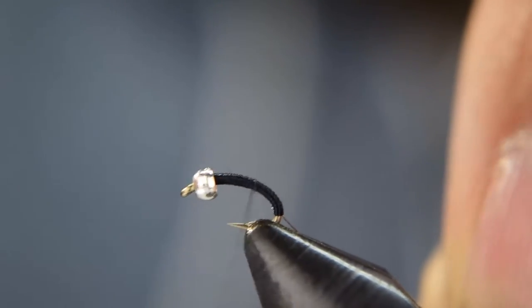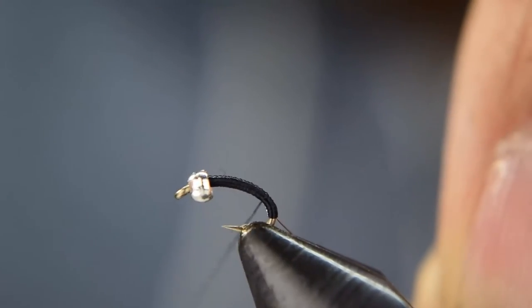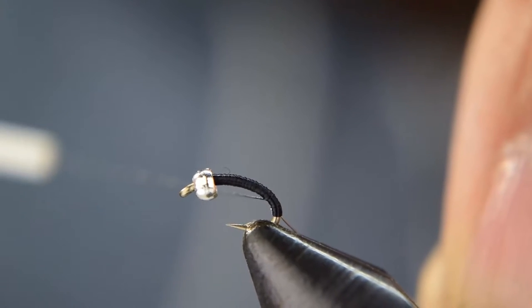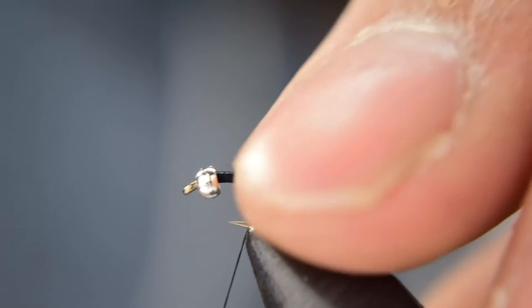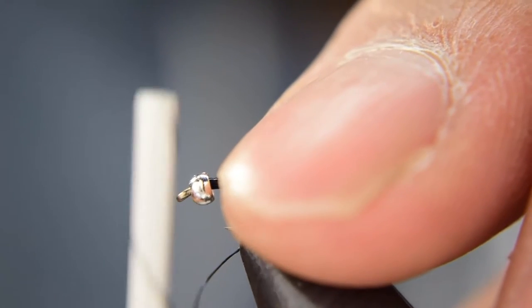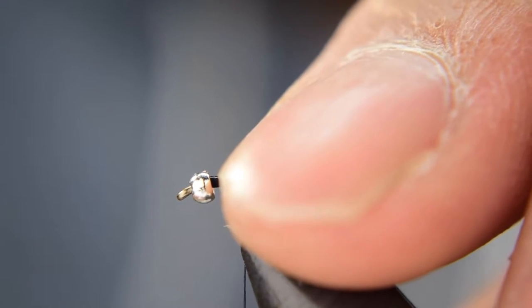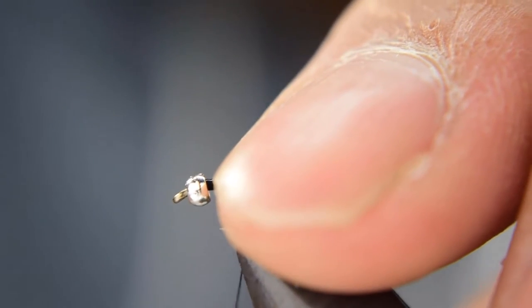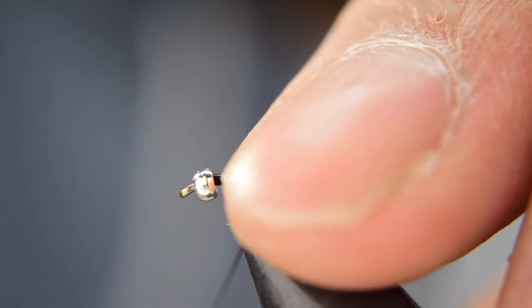First of all, we're going to go ahead and get the body started here. We're going to wrap back, not all the way down to the bend, to right about there. Before we come up, we're going to take the bobbin here and we're going to counter spin it, which will loosen and flatten out the thread.